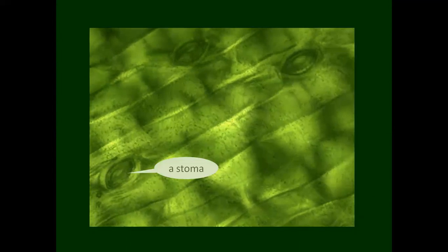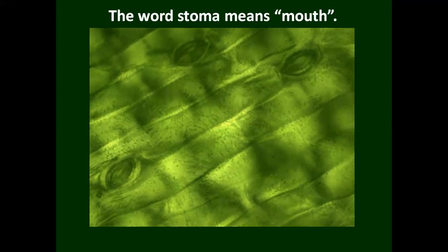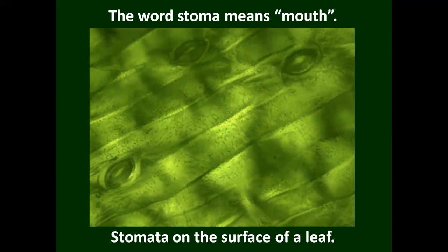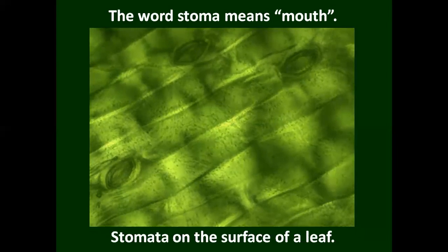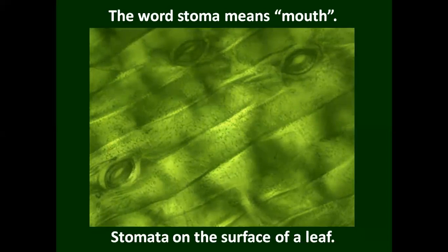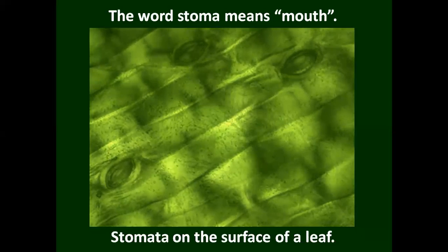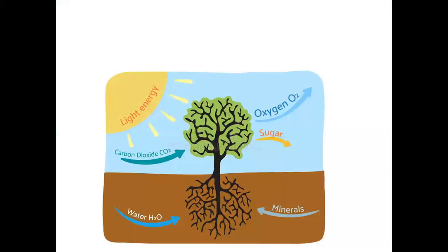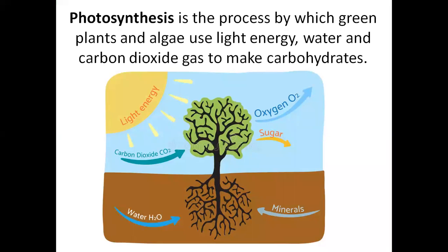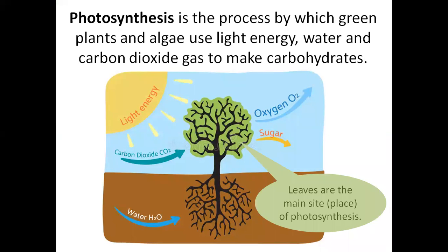A stoma — the word stoma means mouth. Here we see three stomata on the surface of a leaf. Photosynthesis is the process by which green plants and algae use light energy, water, and carbon dioxide gas to make carbohydrates. The leaves are the main site of photosynthesis.